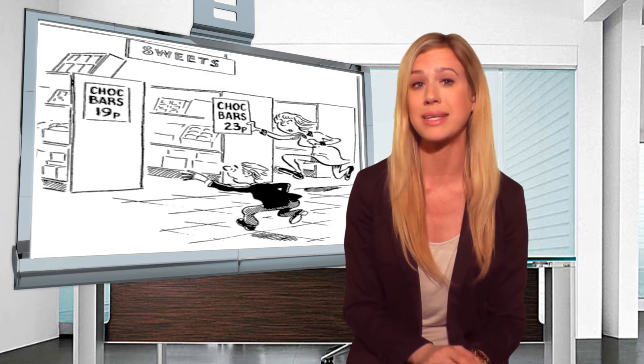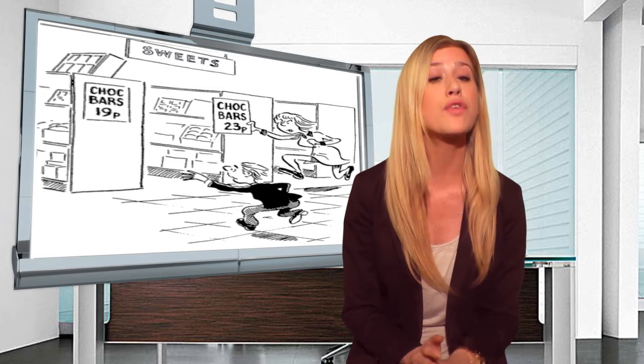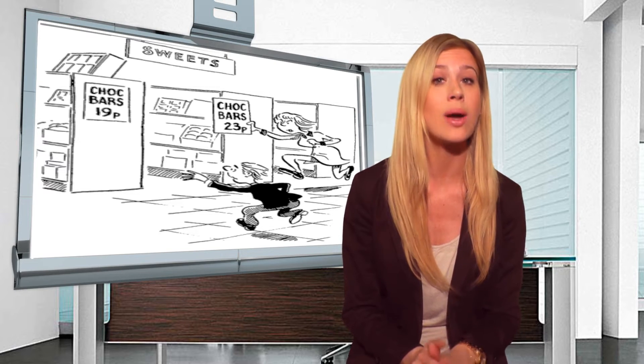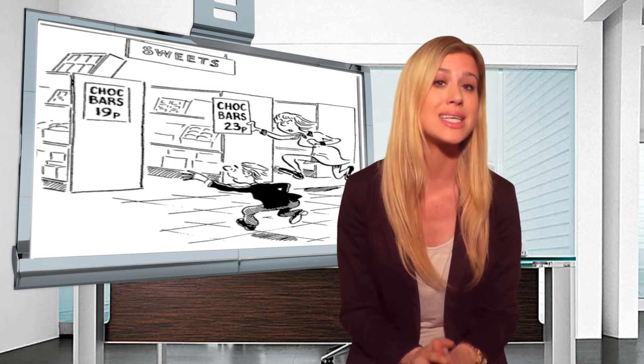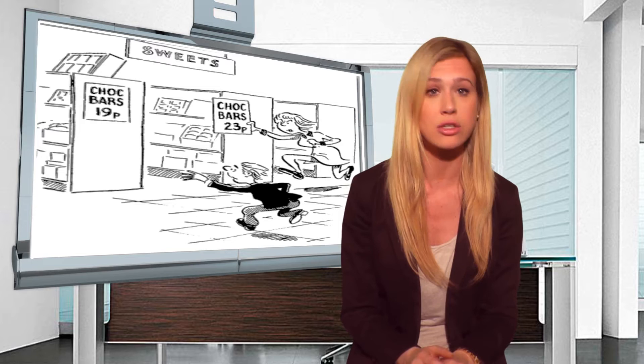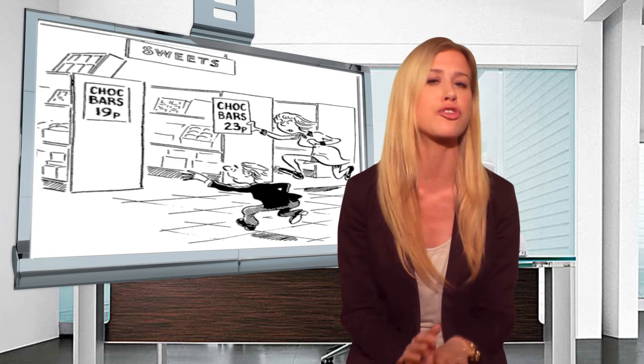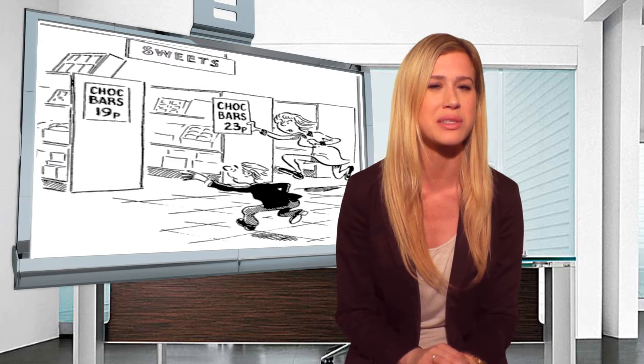The RPI is calculated by sampling such retail goods as food, tobacco, household goods and services, transport fares, motoring costs, clothing and leisure goods and services.